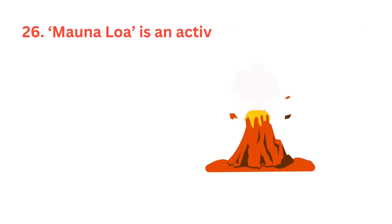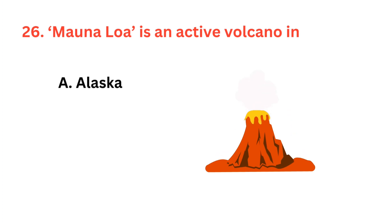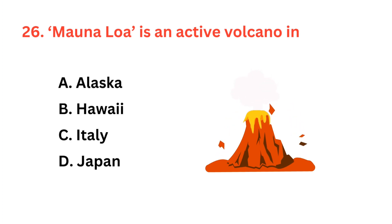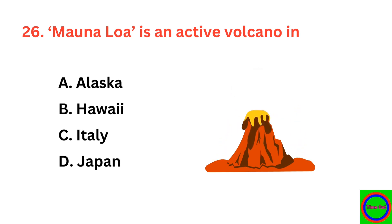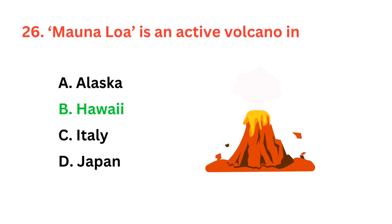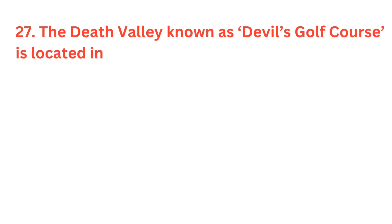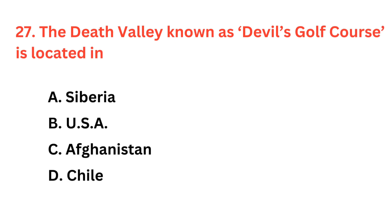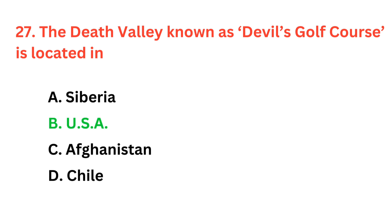Mauna Loa is an active volcano located in? The correct answer is option B, Hawaii. The Death Valley, known as Devil's Golf Course, is located in? The correct answer is option B, USA.